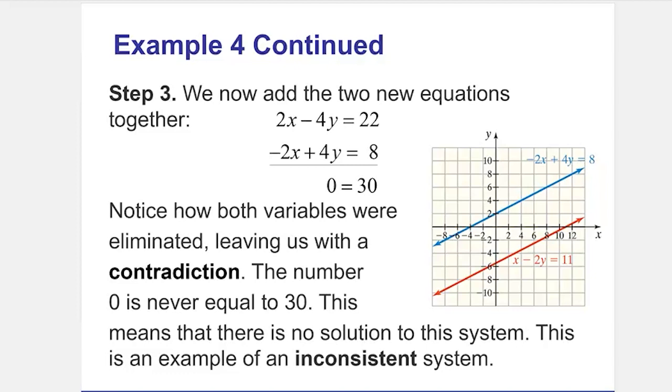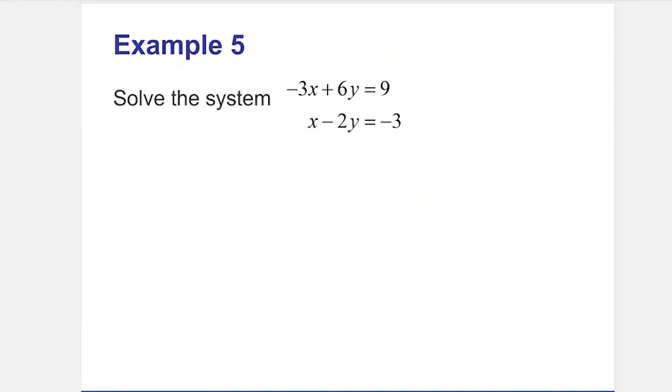And this is an example of an inconsistent system. So notice, if we graph these, there are two lines, they have the same slope, but they never intersect because they're parallel to each other. So let's do another system and see what happens.